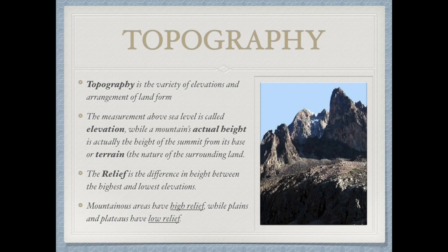A mountain's actual height is different from elevation. The mountain's actual height refers to the height of the summit from the base — so from the bottom of the mountain to the top. Elevation refers from sea level to the actual top of the mountain, which may not be at the base; it may be above the base.